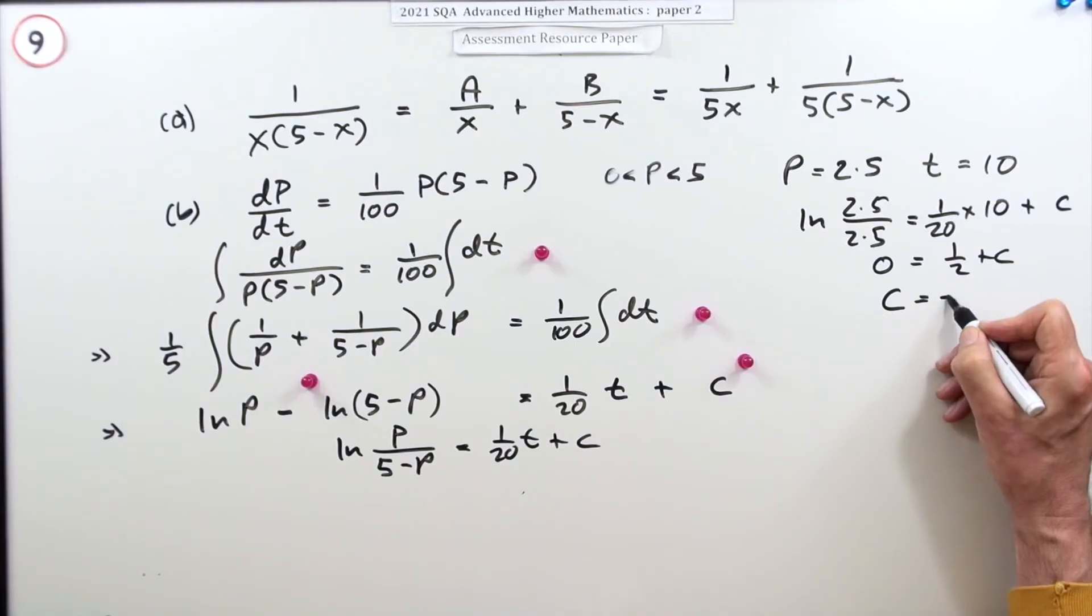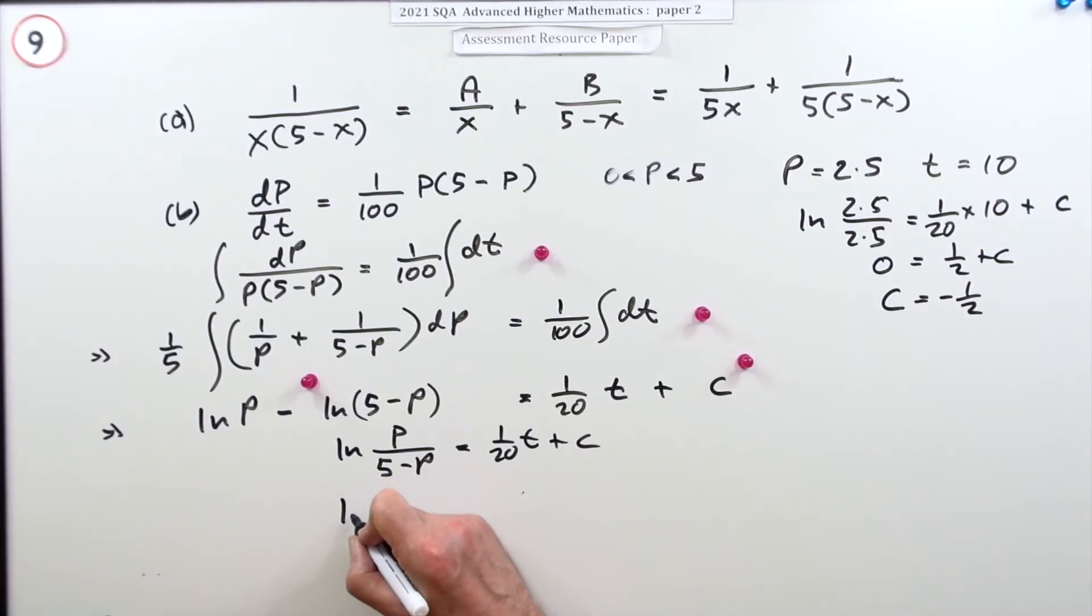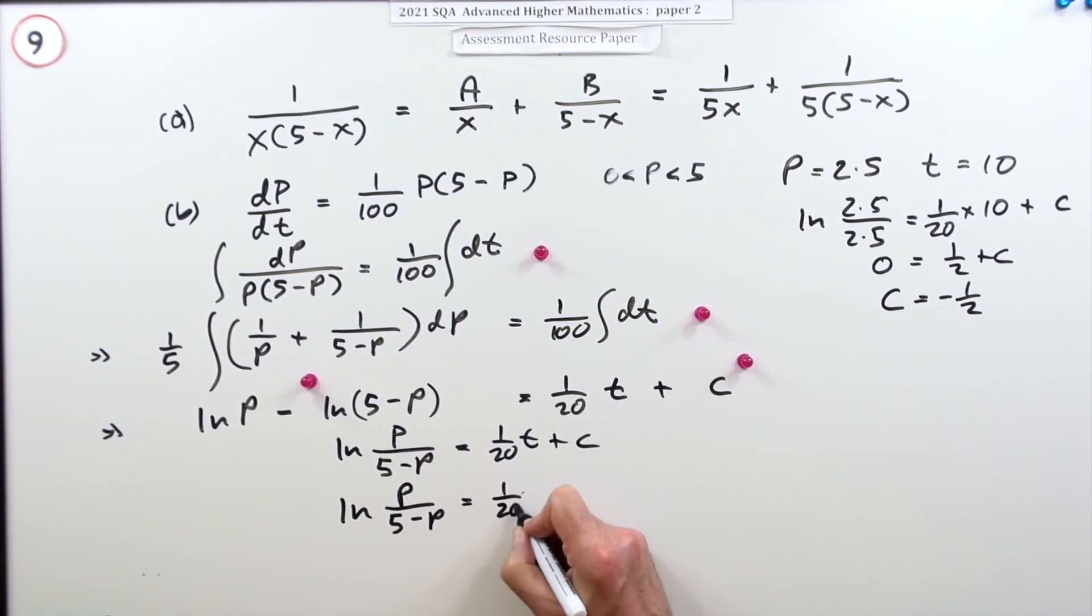So that means that c is negative a half. So now I can put this down, so I've got ln of P over (5 minus P) equals a twentieth of t, or I could put t over 20 minus a half.